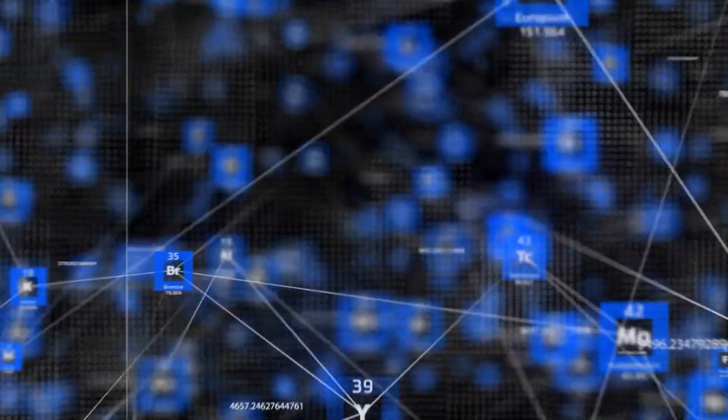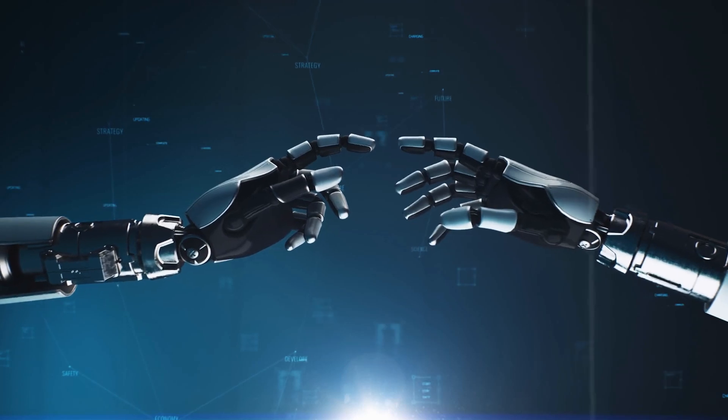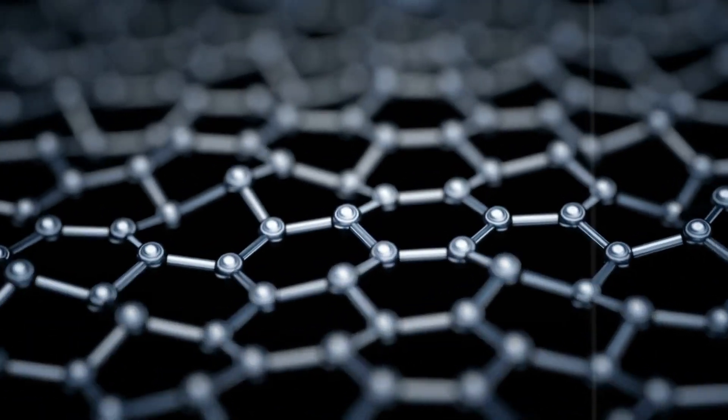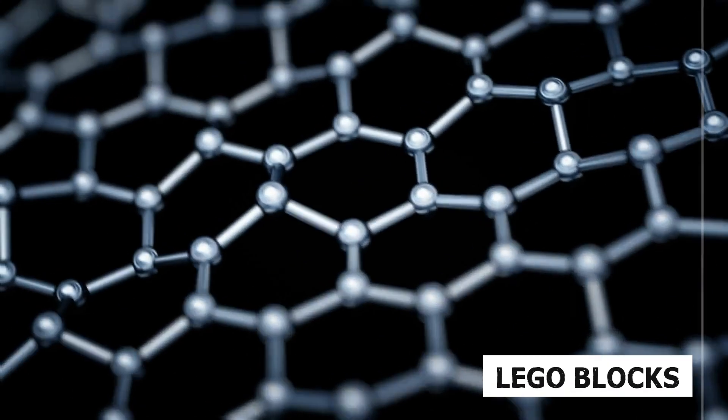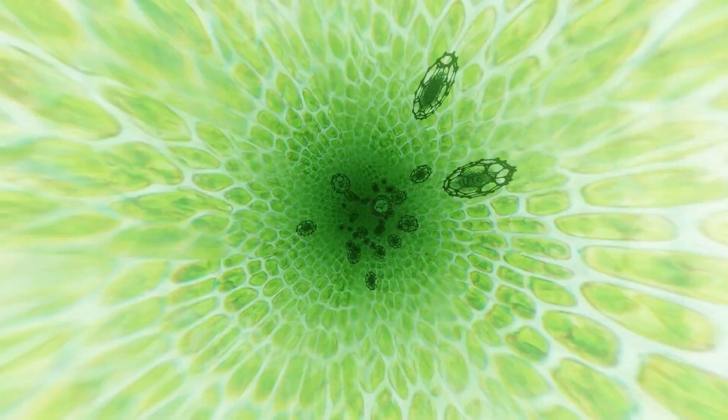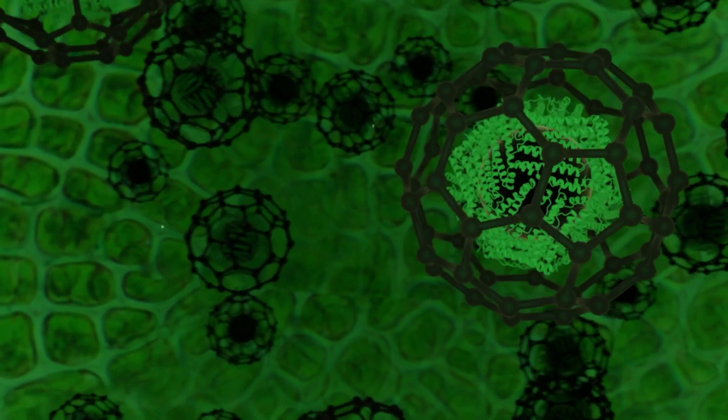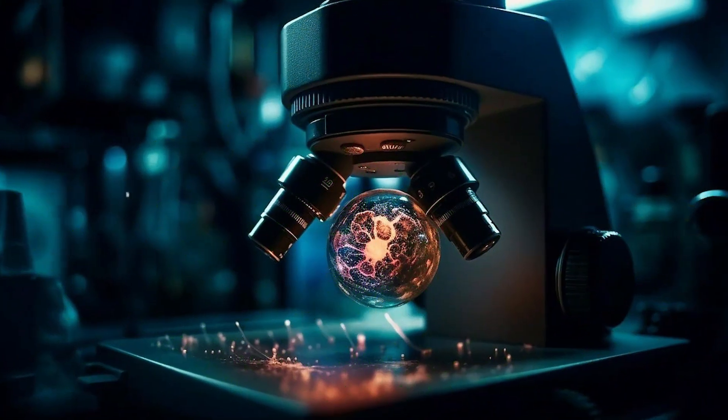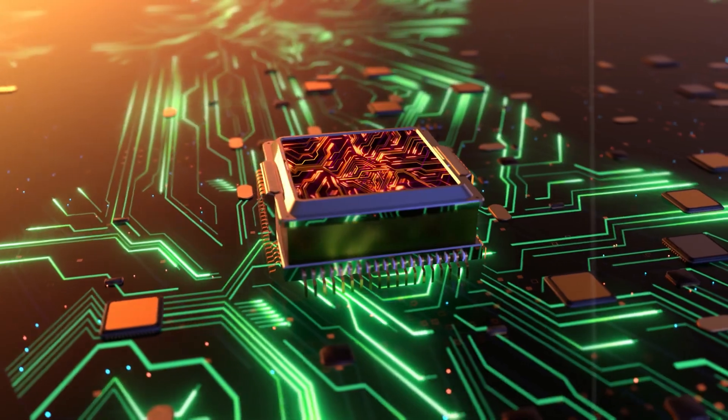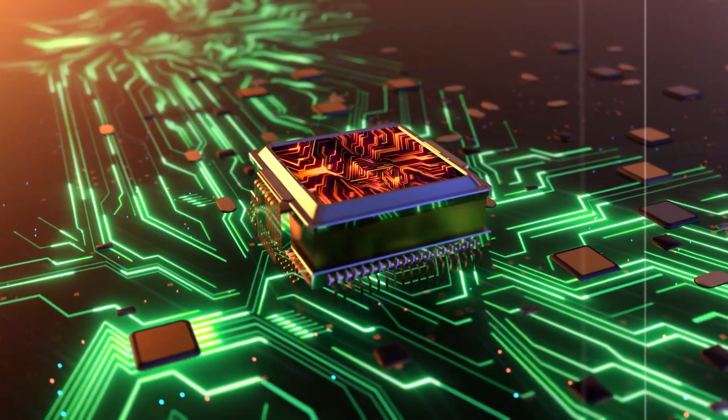Think about it. Everything comprises tiny atoms, from your smartphone to the air around us. So, why do things look and work so differently? It's all about the arrangement. Like building different things with the same Lego blocks, how atoms are put together changes everything. This setup gives everything its unique look and function. Grasping this idea is critical to unlocking the power of nanotechnology, letting us craft materials in incredible new ways.